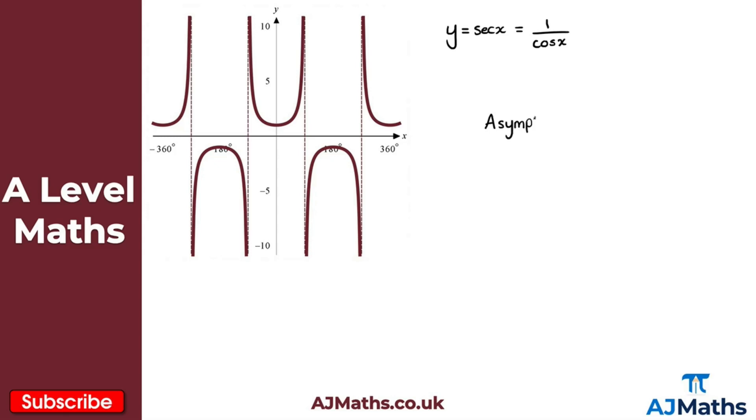So the asymptotes here are x equals, so this first one here will be minus 270 degrees. The next one here is minus 90 degrees, my next one along now is positive 90 degrees, and then finally positive 270 degrees.